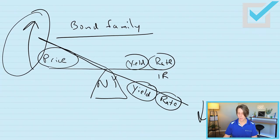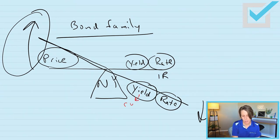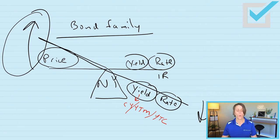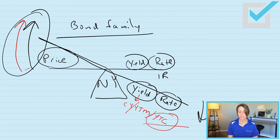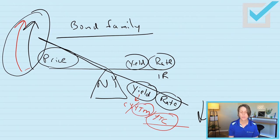Let's revisit and expand on this bond teeter-totter. The yields are current yield, yield to maturity, and yield to call. When a bond is trading at more than par value — so interest rates have gone down and the market price is at a premium — the most important yield to consider would be yield to call, also called yield to worst. Issuers call bonds when interest rates have decreased enough that it makes sense to refinance the debt. But if interest rates are stable, it is the bond's yield to maturity.